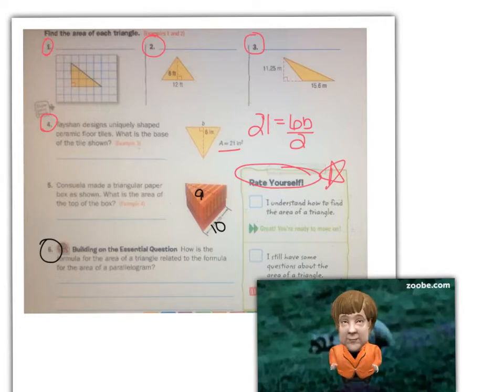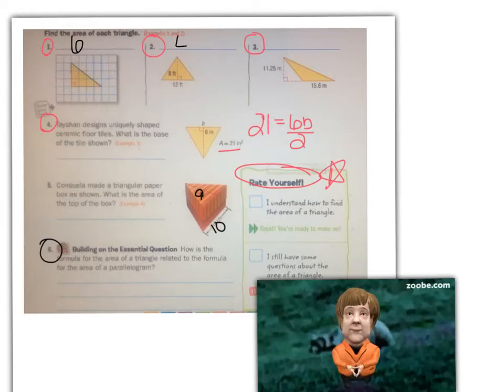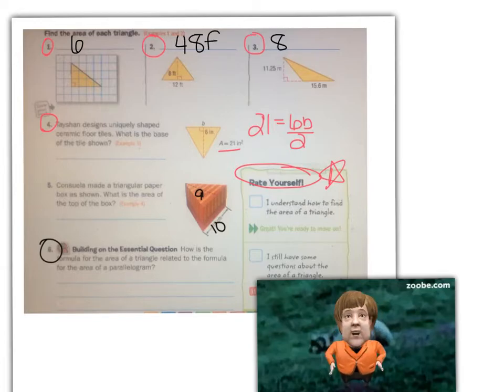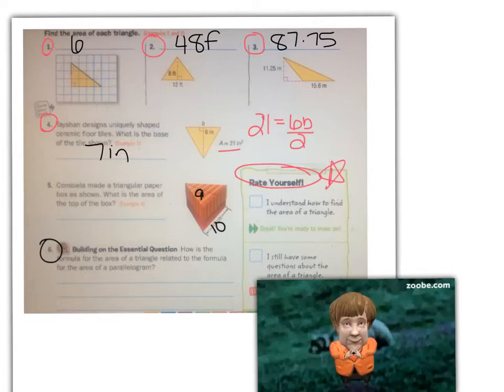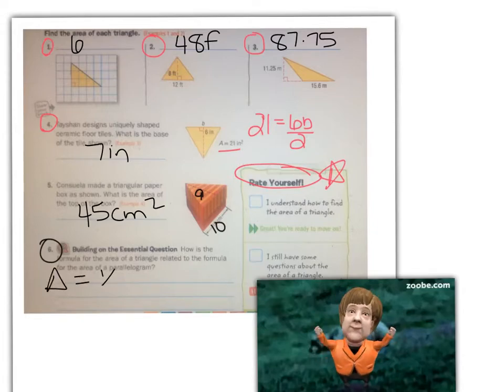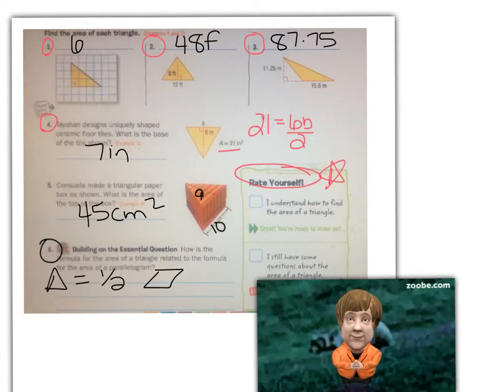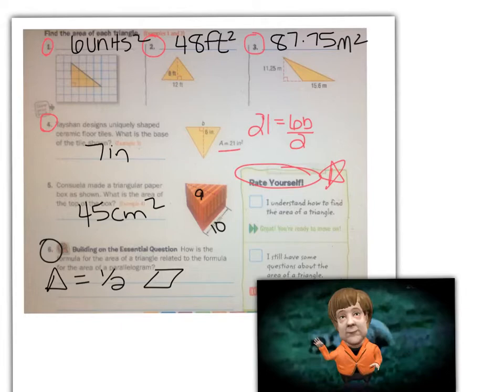Number 1, the answer is 6 inches squared. Number 2, 48 feet squared. Number 3, 87.75 meters squared. Number 4, 7 inches. Number 5, 45 centimeters squared. And for number 6, hopefully you remember that the area of a triangle is one half the area of a parallelogram. Great job. Please don't forget to rate yourself. If you had trouble with many of these problems, please stop at this point and ask your teacher for more help to make sure that you understand how to find the area of a triangle. Also, if you marked yourself as still having a lot of questions or some questions, please talk to your teacher. If you said that you understood it, great job. You're ready to move on to the note check. Bye for now.